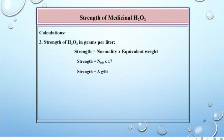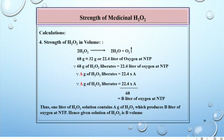Strength of H2O2 in grams per liter: strength equals normality times equivalent weight, so strength equals ND times 17, so strength equals A grams per liter. Strength of H2O2 in volume: 2H2O2 gives 2H2O plus O2. 68 grams corresponds to 32 grams or 22.4 liters of oxygen at NTP.